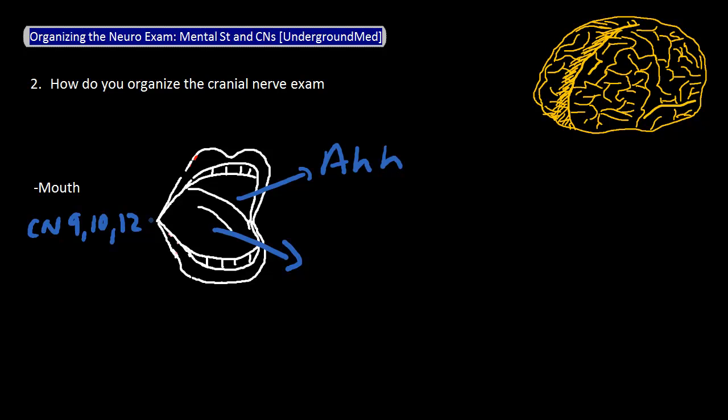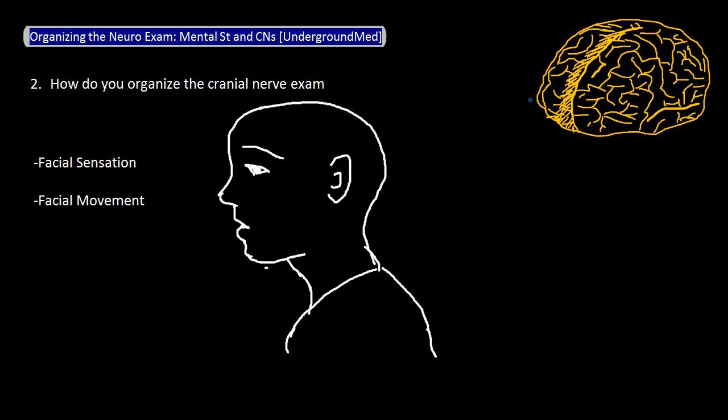After testing the eyes, mouth, and ears, you can test sensation and movement of the rest of the face. Test sensation by assessing the forehead, cheek, and chin on both sides. Remember that there are two major sensory pathways you should test: the first carries pinprick and temperature, and the second carries vibrational sense. I like to use a cold tuning fork to test temperature and a vibrating tuning fork to test vibration sense at each of these three points. Next, test facial movements by asking the patient to raise his eyebrows, puff out his cheeks, and smile.